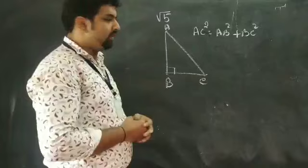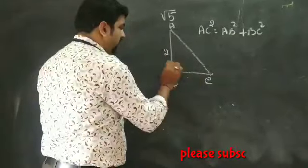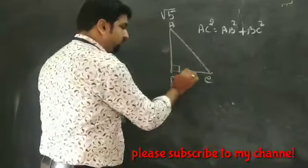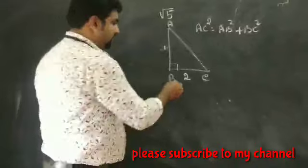Now how to find root 5 on a number line? For this, let us take this value as 2 and this value as 1. Now what happens? I apply the Pythagoras theorem here.